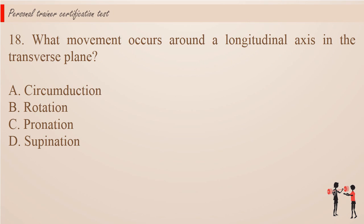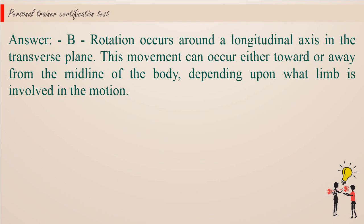Question 18. What movement occurs around a longitudinal axis in the transverse plane? a. Circumduction. b. Rotation. c. Pronation. d. Supination. Answer: b. Rotation occurs around a longitudinal axis in the transverse plane. This movement can occur either toward or away from the midline of the body, depending upon what limb is involved in the motion.